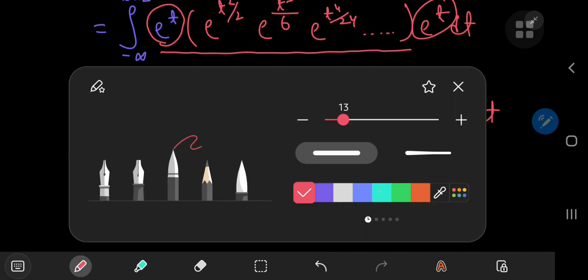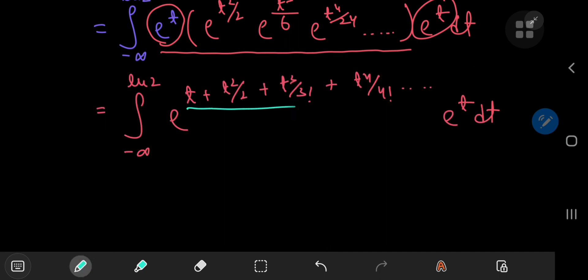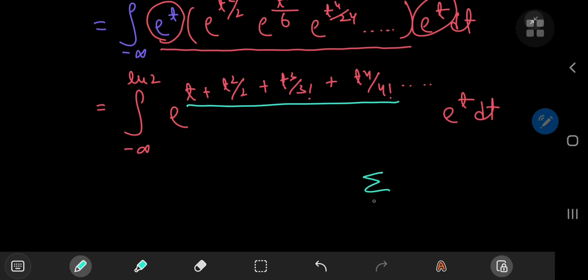Now, what exactly do we have up here in the exponent? Well, we know that the sum over the non-negative integers k of t to the k divided by k factorial equals e to the t.